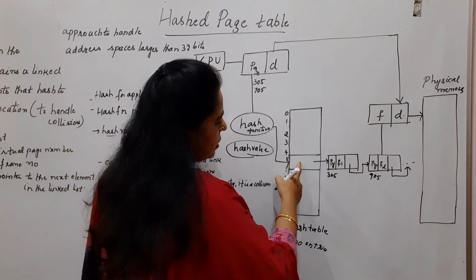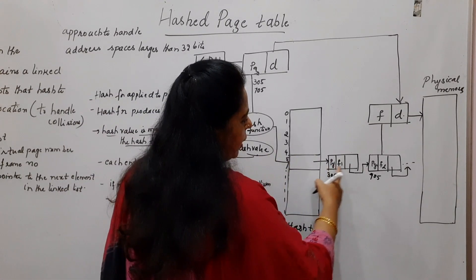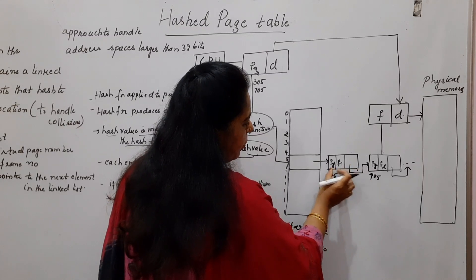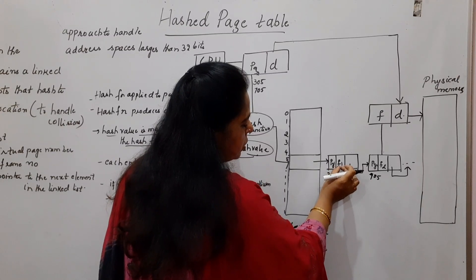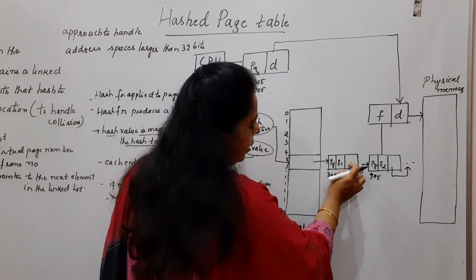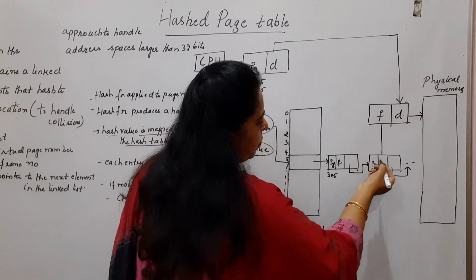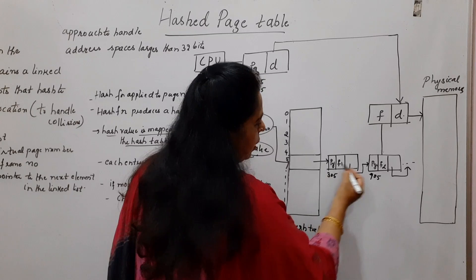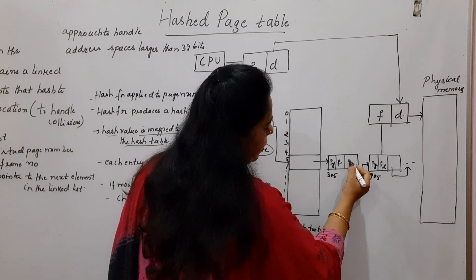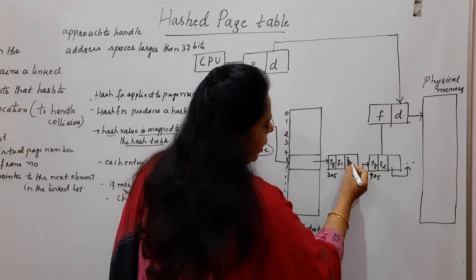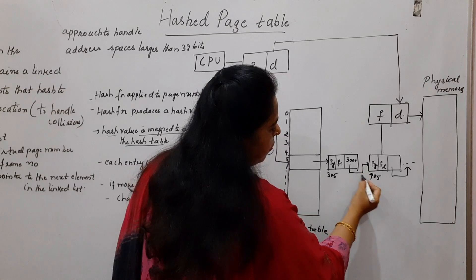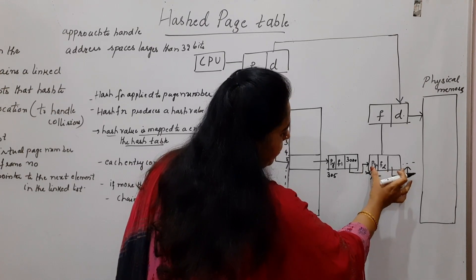So here what it will do is, when it searches this location, it finds this is one information of one particular page number 305. It is stored in frame 1. Then after that in the linked list, it will point out to the address where the next information about another page number is stored. Suppose if this is having some base address as 3000, then this information is stored at 3000.